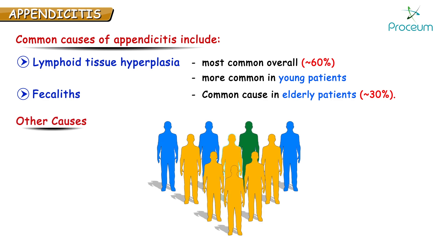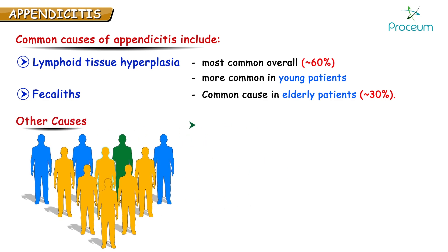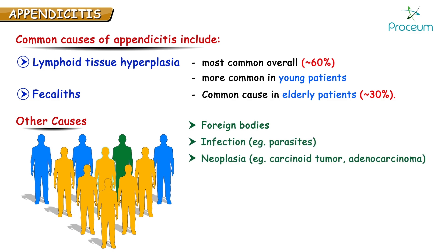Other causes may include: number one, foreign bodies; number two, infections — for example, parasitic infections; number three, neoplasias like carcinoid tumour and adenocarcinomas.